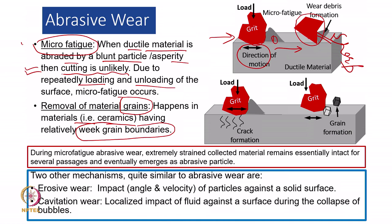This will be named as micro fatigue abrasive wear, which happens because of ductile material. So: ductile material is essential, the asperity or particle must be blunt, and there should be a load causing sliding with loading and unloading. For grain removal, in materials like ceramics where grains may be weaker, the debris will act directly against the grain and try to remove the complete grain — hence we say removal of grain material.